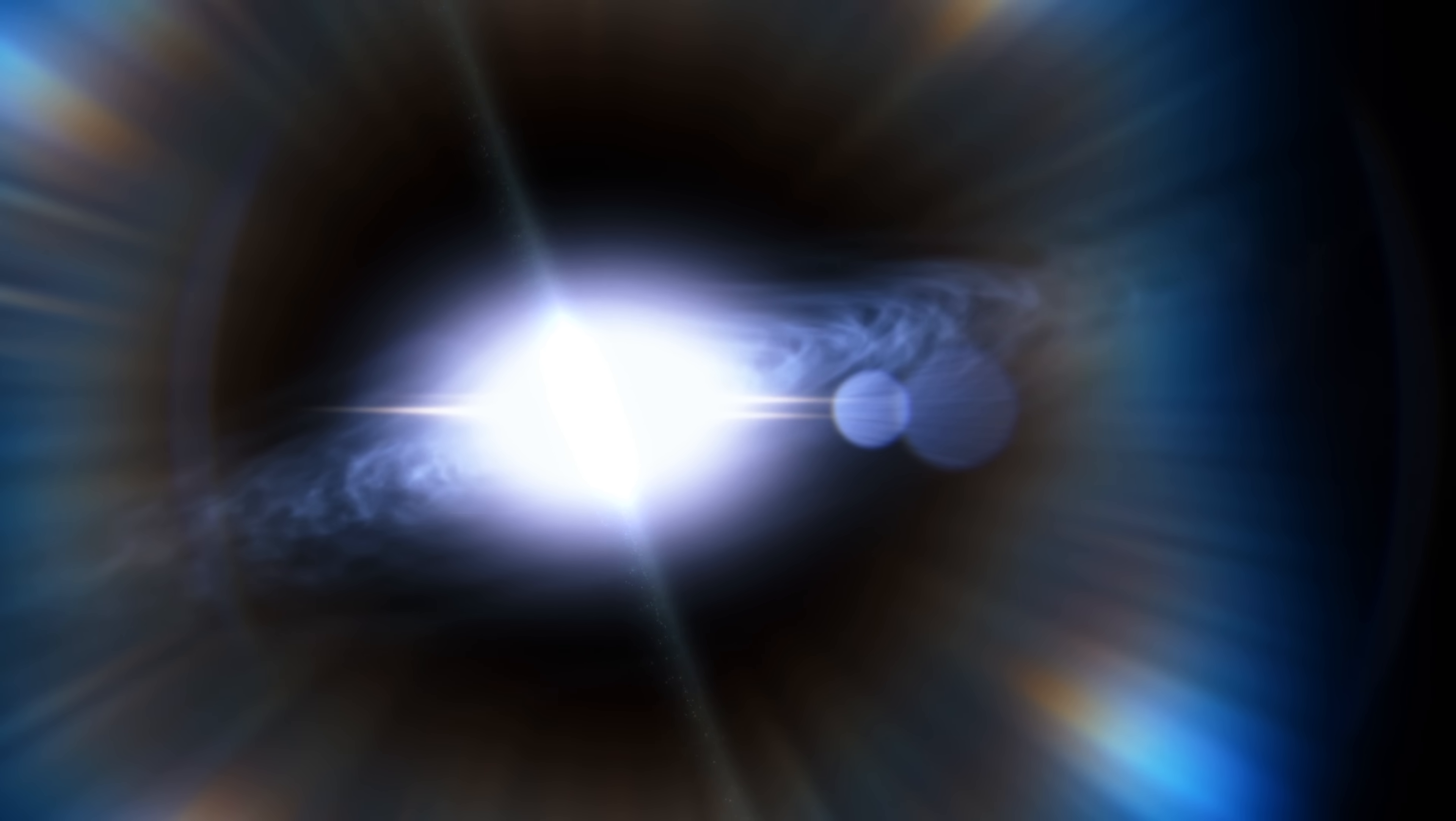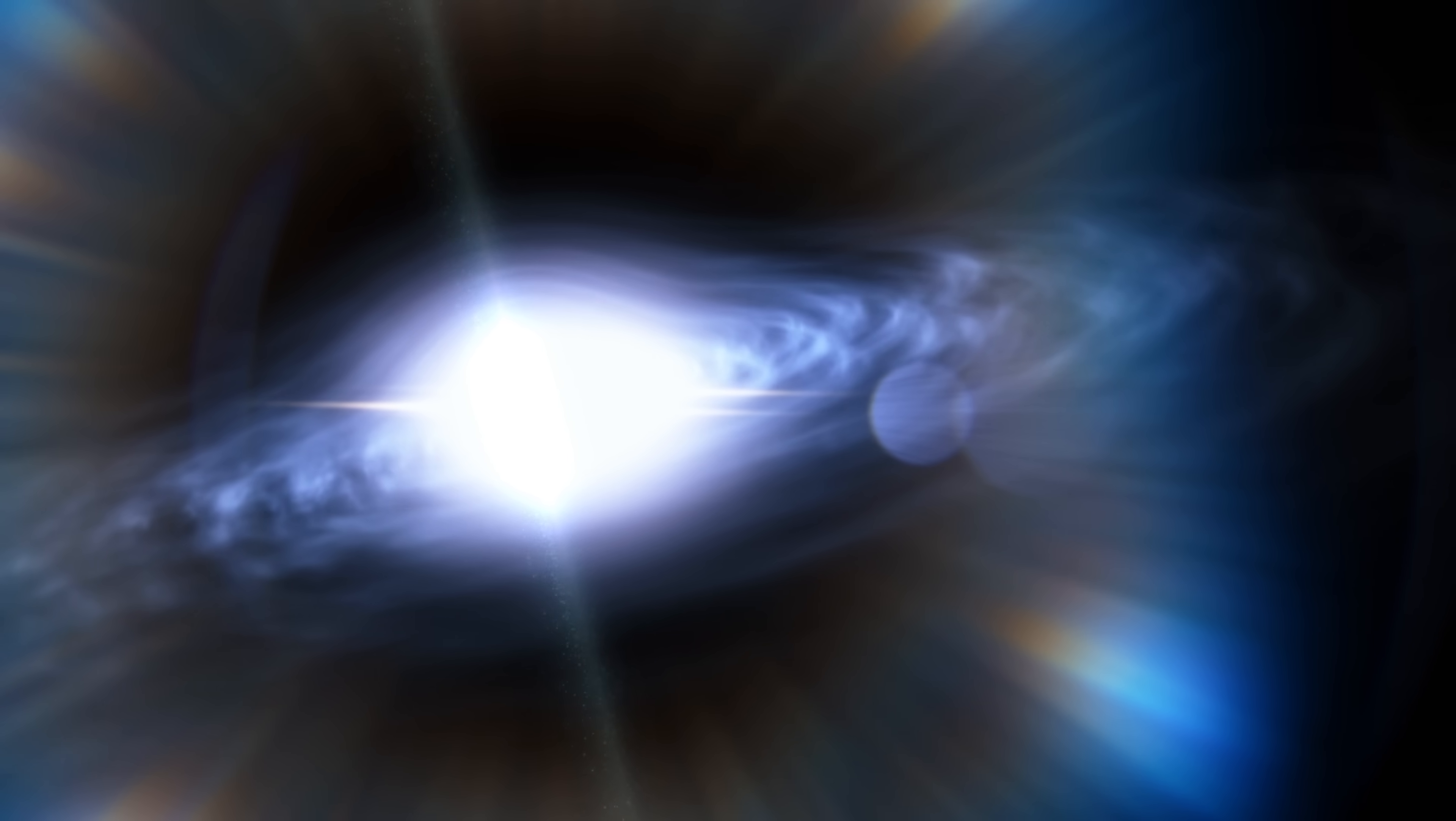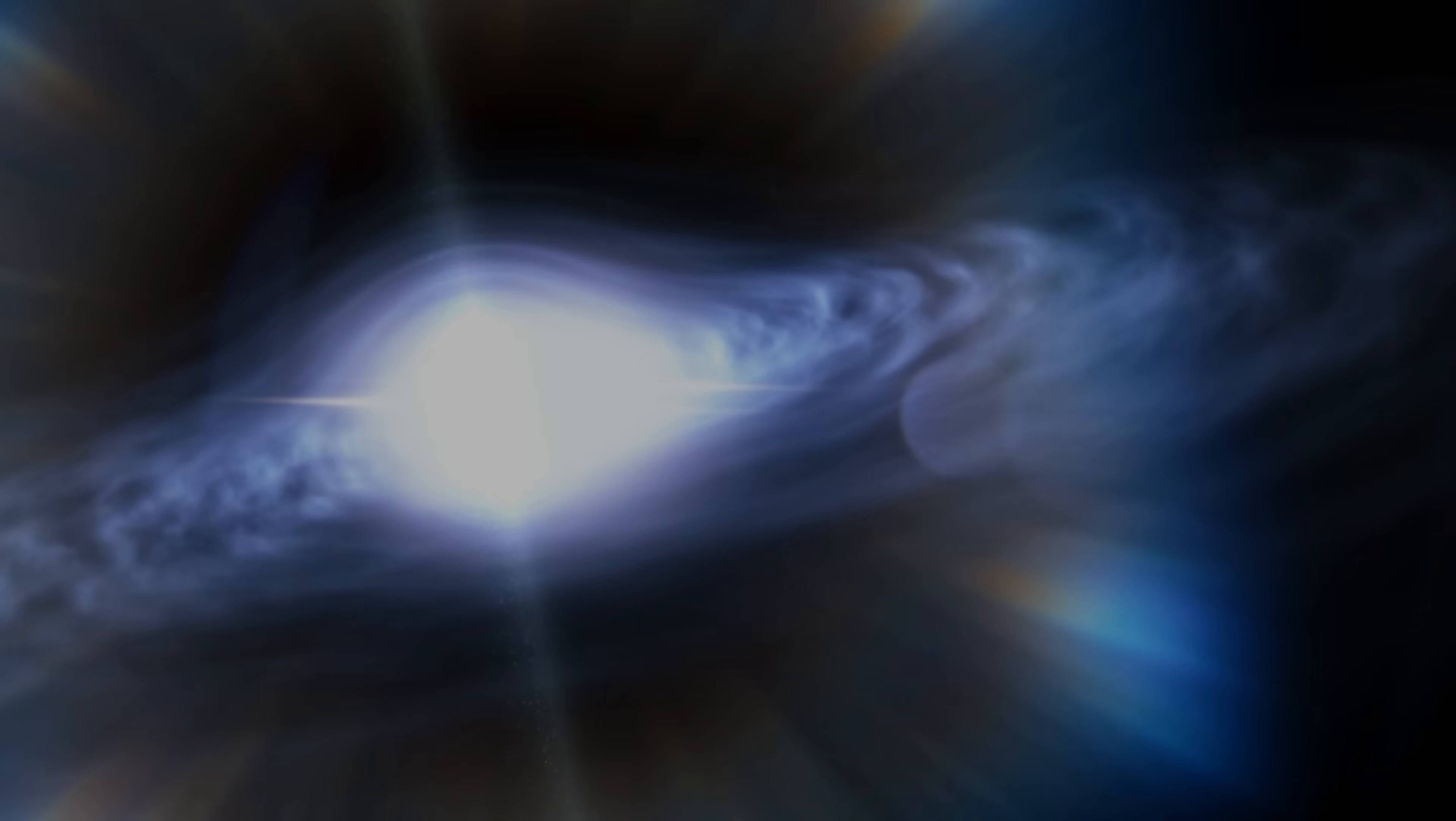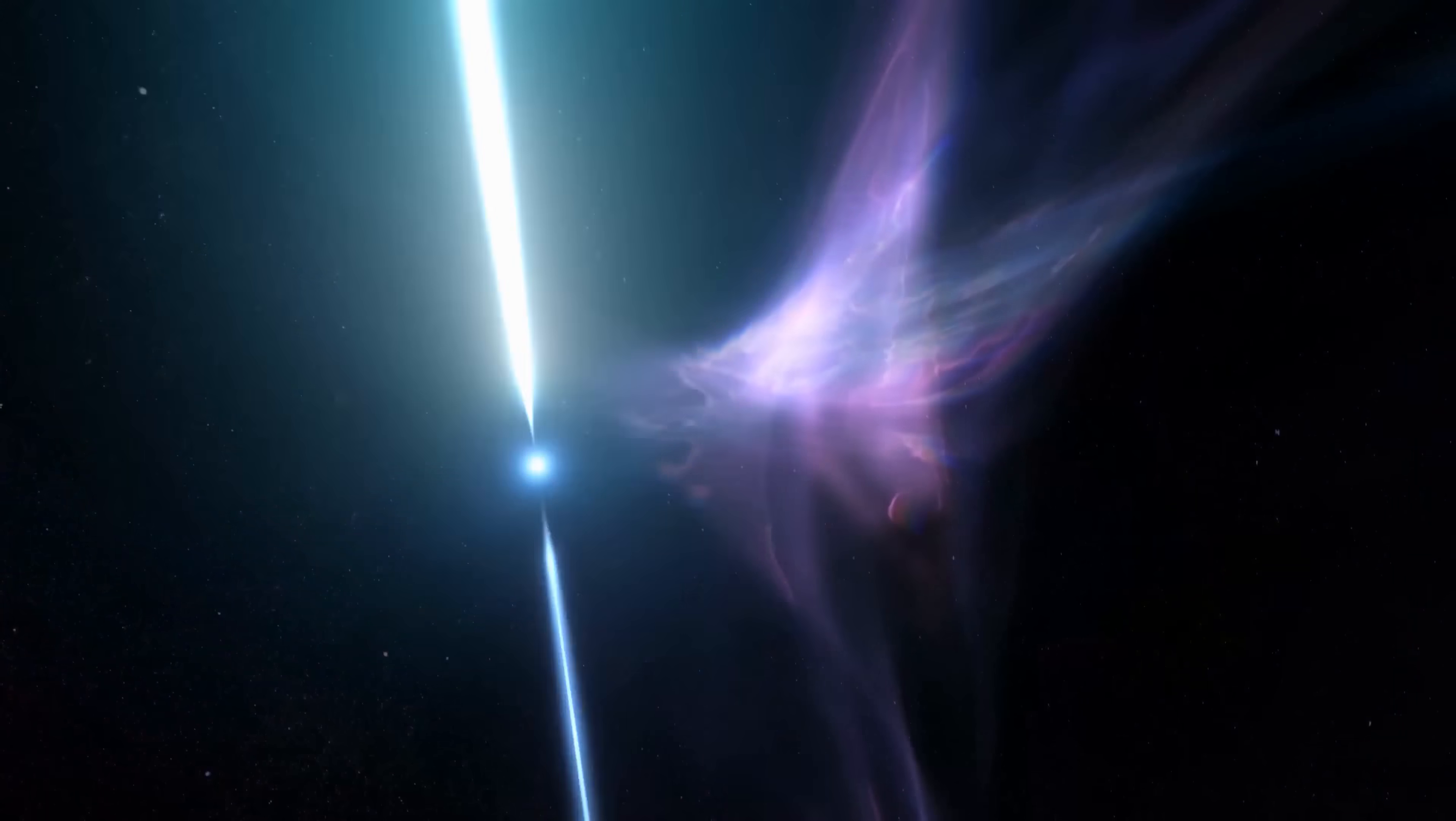When they spin, their magnetic fields generate beams of electromagnetic radiation, including radio waves. These waves sweep through space like the beams of a lighthouse on the sea. When these rays cross the Earth, our radio telescopes pick them up as pulses, hence the name pulsars.